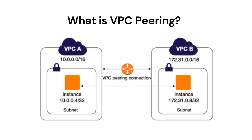Next question is: what is VPC peering? A VPC peering connection is a networking connection between two VPCs that enables you to route traffic between them using private IPv4 or IPv6 addresses. Instances in either VPC can communicate with each other as if they are within the same network. You can create a VPC peering connection between your own VPCs or with a VPC in another account. The VPCs can be in different regions, also known as inter-region VPC peering connection.